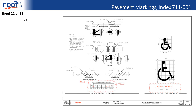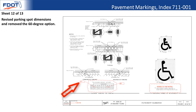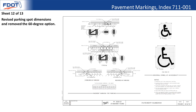Sheet 12 of 13: the angled parking has been revised. What had previously been a 19 feet 1 inch offset from the curb face is now 17 feet, and the other dimensions have been changed accordingly. Also the 60-degree option has been removed — it is now just the 45-degree option.